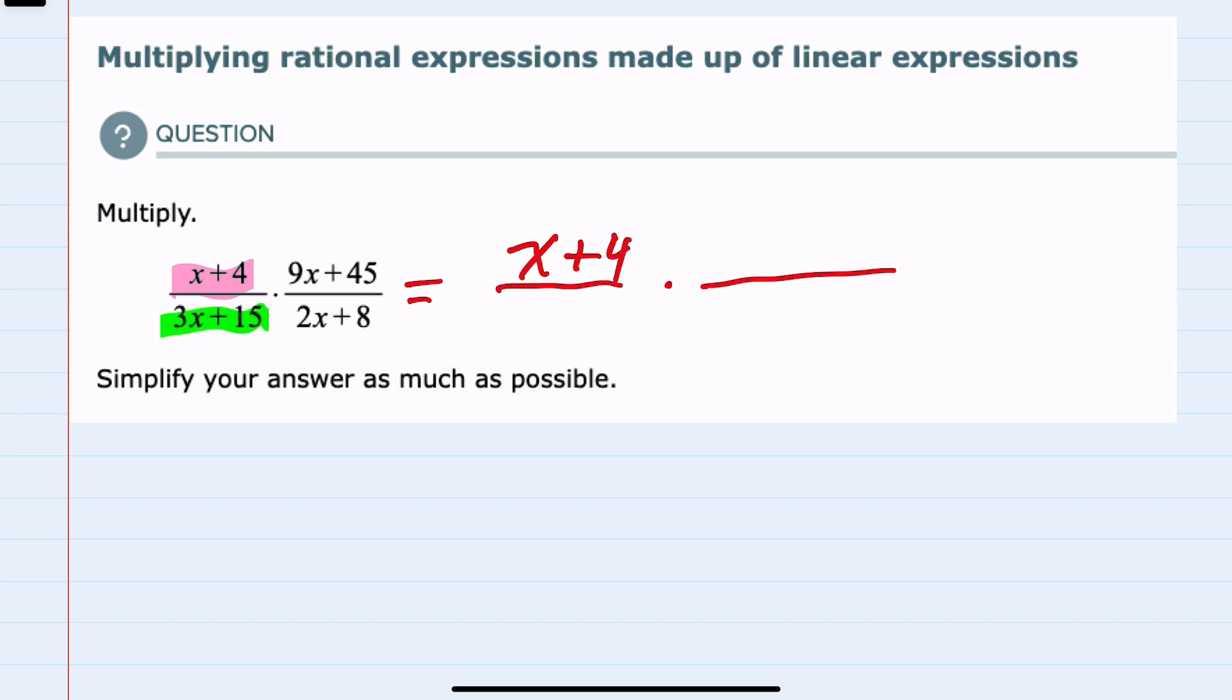In the bottom, however, the 3x plus 15, I can factor out a 3 from each of those terms. Factoring out a 3 from 3x leaves me x. Factoring out a 3 from the 15 leaves me a plus 5. So I have factored out the greatest common factor of 3x and 15.